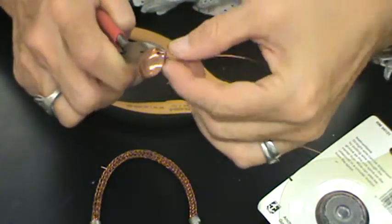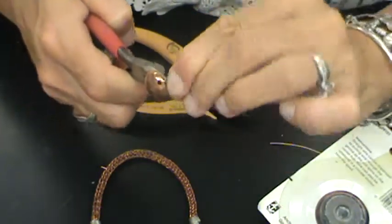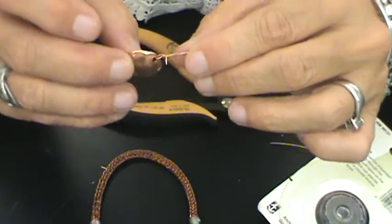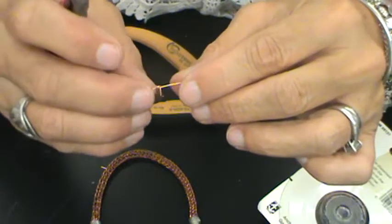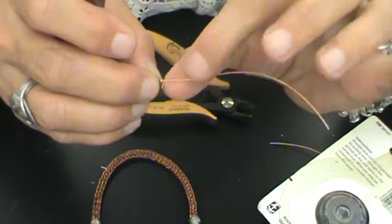And I'm going to twist the wire around and whenever you twist your wire you always want this to be a very nice tight spiral. You don't want that to be loose either.